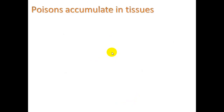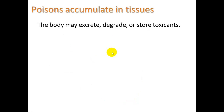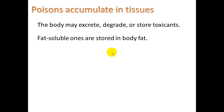Poisons accumulate in tissues — that's the big deal. The body may excrete, degrade, or store toxicants. If it is a fat-soluble poison, it will be stored in body fat and not excreted — those are the most dangerous. If it's not fat-soluble, the body can pass it through urine. If it's degradable, the liver can break it down and the byproducts are excreted.